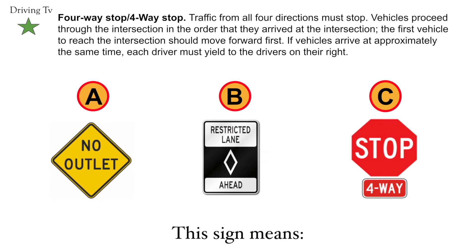Four-way stop. Traffic from all four directions must stop. Vehicles proceed through the intersection in the order that they arrive. The first vehicle to reach the intersection should move forward first. If vehicles arrive approximately at the same time, each driver must yield to the driver on their right. The correct answer would be C. Four-way stop.